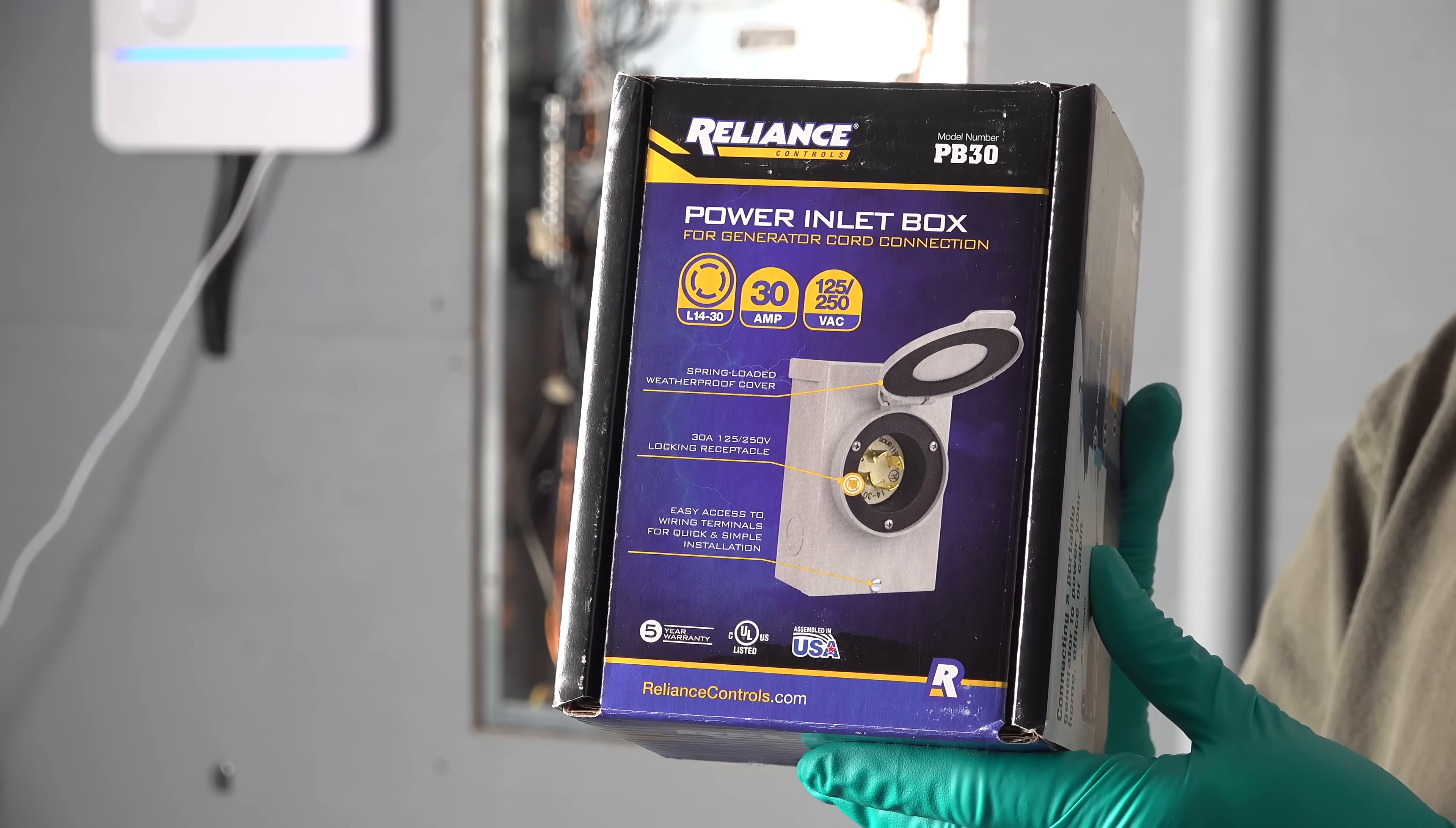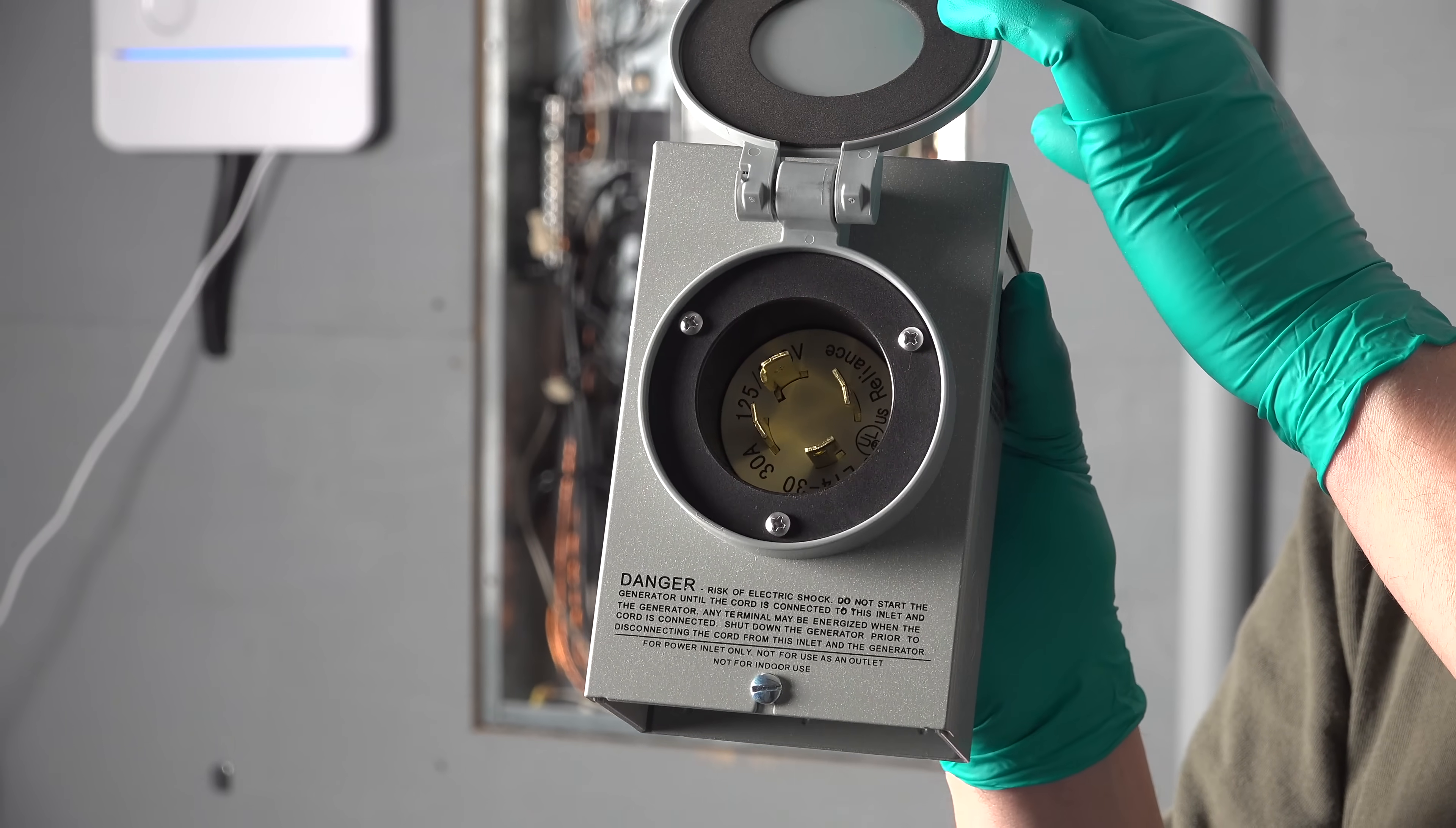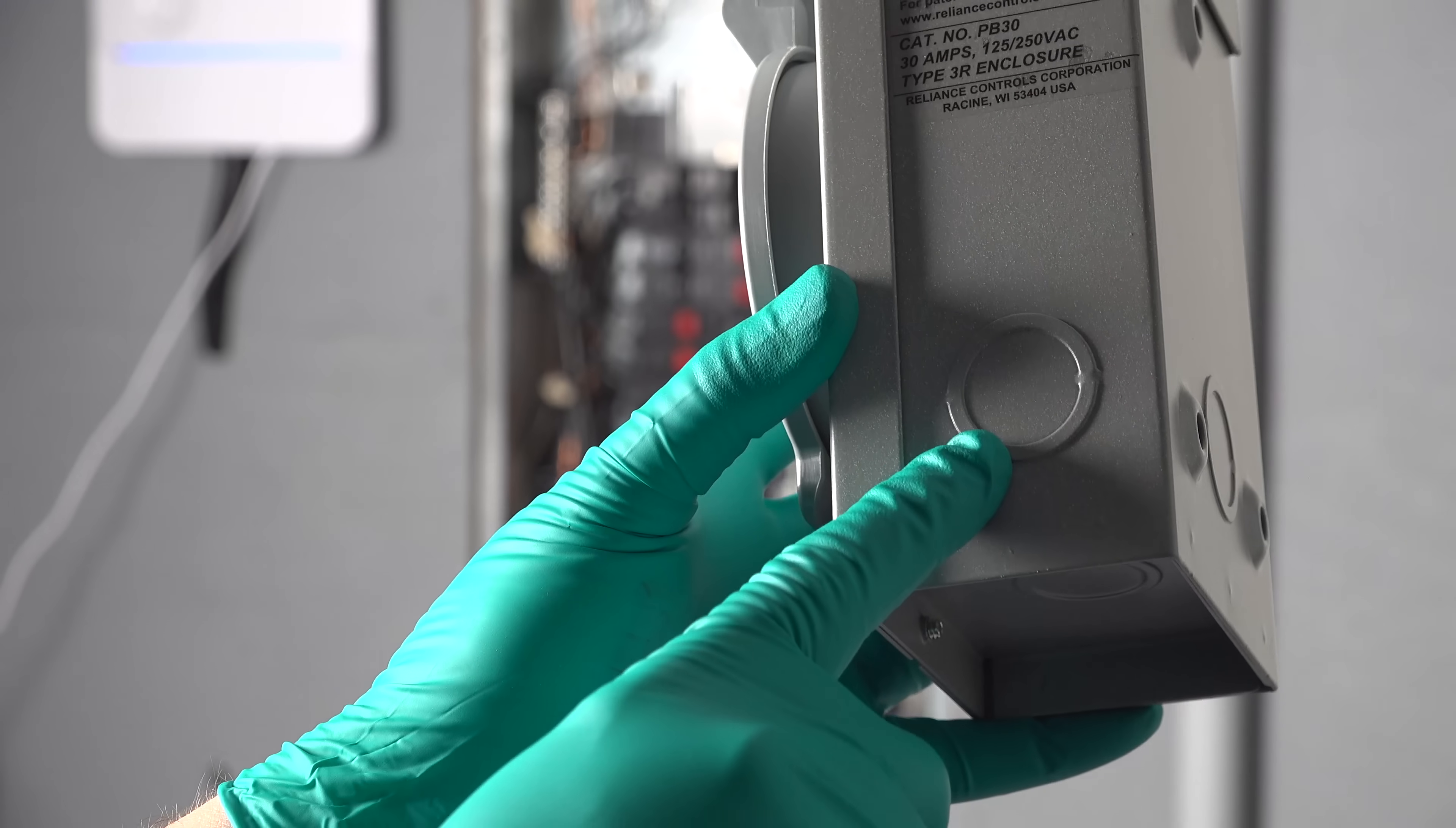Next, we've got our generator inlet box. This one is rated for 30 amps at 240 volts, so this will be perfect for most gas generators or battery-powered units. There are a million different models of these online, but this Reliance one has been around forever, so I'm pretty comfortable with it. I also like the fact it's got knockouts on both sides, the bottom and the back.